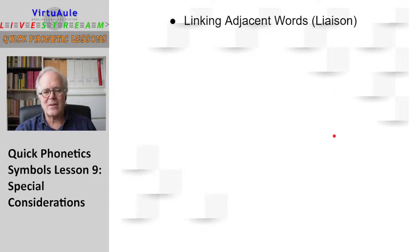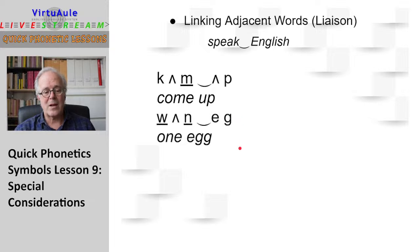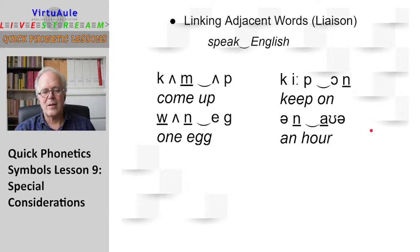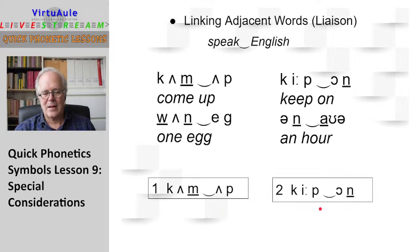Linking adjacent words — this is called liaison. It's very common in French. We'll look at this kind of liaison where the last consonant is attached to the first vowel of a new word. Listen and repeat: 'come up' — together — come up, it's like one word. One egg. Keep on. An hour — this is particular because the H is not pronounced, so we have a vowel. Let's practice: read — come up. Read — keep on.